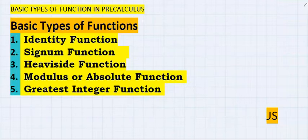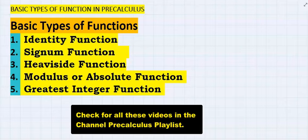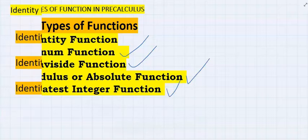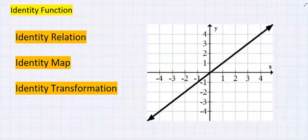In this video we are going to consider the identity function. In subsequent videos we will look at signum function, Heaviside function, modulus or absolute function, and greatest integer function. Another name for identity function is identity relation, identity map, or identity transformation.